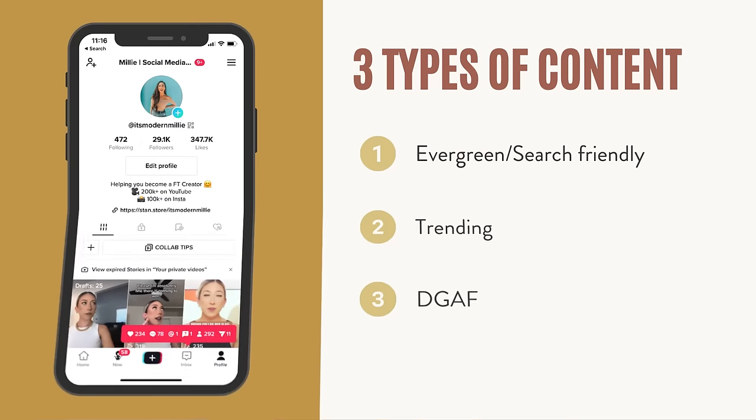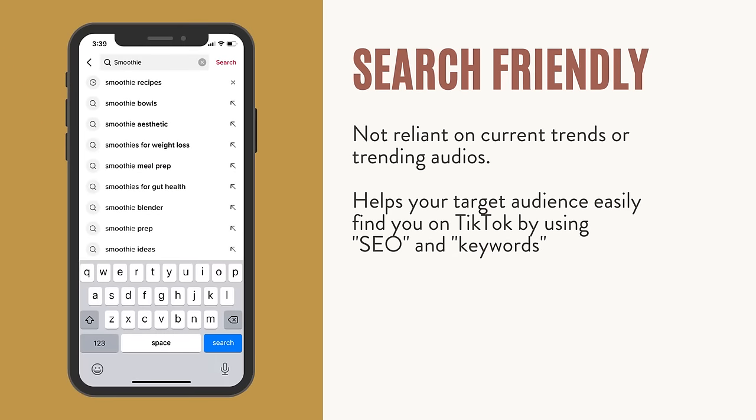So once you have your niche, what type of content do you create? My current strategy rotates between three types: search-friendly evergreen content, trending content, and DGAF. Search-friendly and evergreen content is not reliant on trends and can be relevant a month from now or a year from now. I could batch 10 videos in a day and it doesn't matter when I post them — like this video on how to grow on TikTok, which will still be relevant six months or a year from now because it's not reliant on a trending audio.